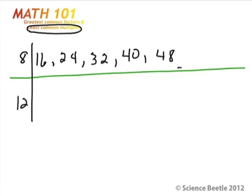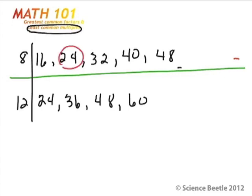Now let's try the 12. 12 times 1 is 12, 12 times 2 is 24, 12 times 3 is 36, 12 times 4 is 48, 12 times 5 is 60. We'll go ahead and stop there. Let's look to see if 8 or 12 have any numbers in common. We find that we have a 24 that's common to both, and a 48 that's common to both.